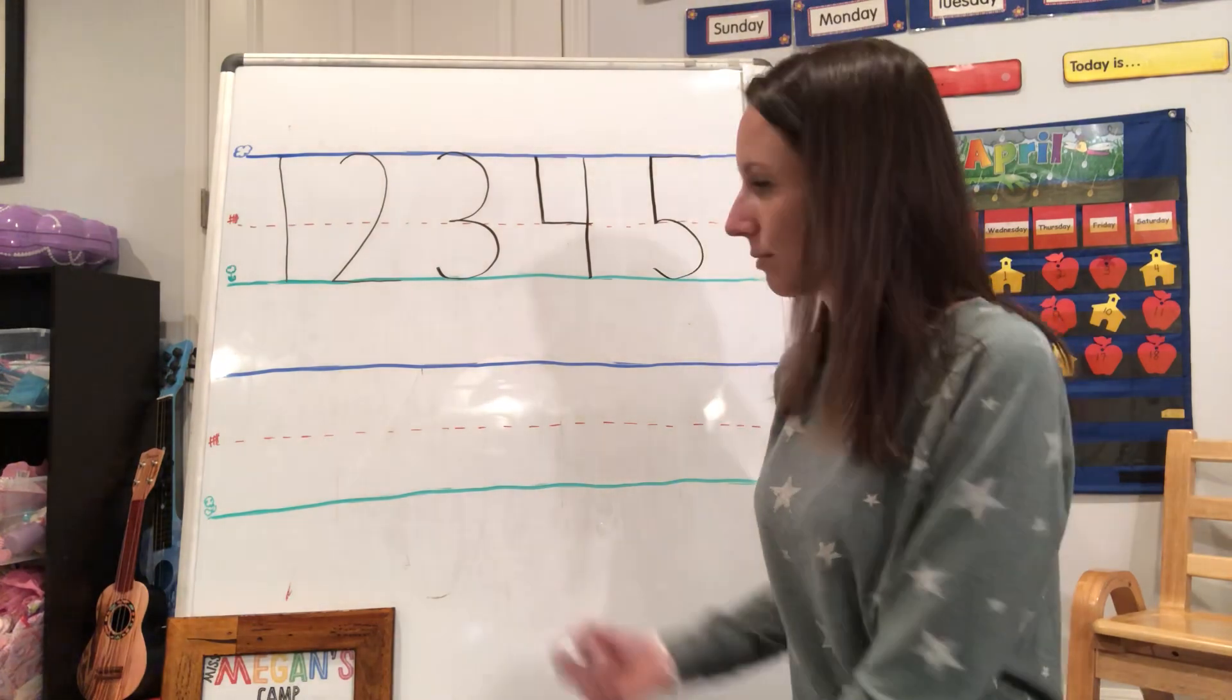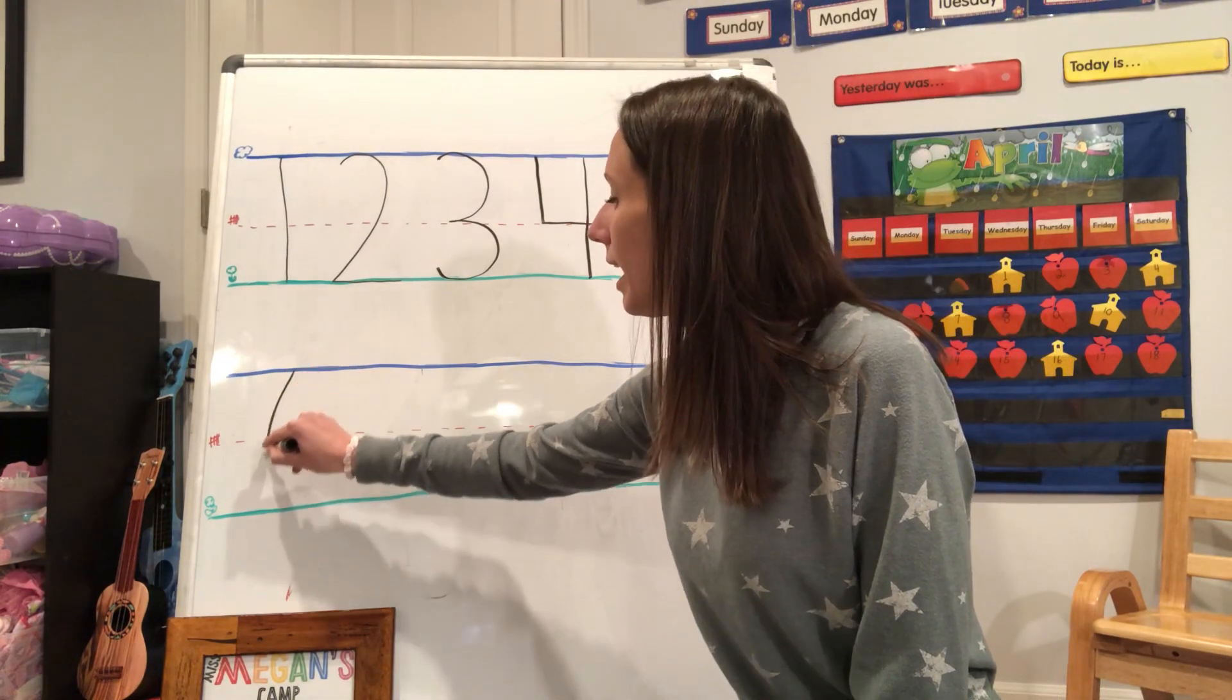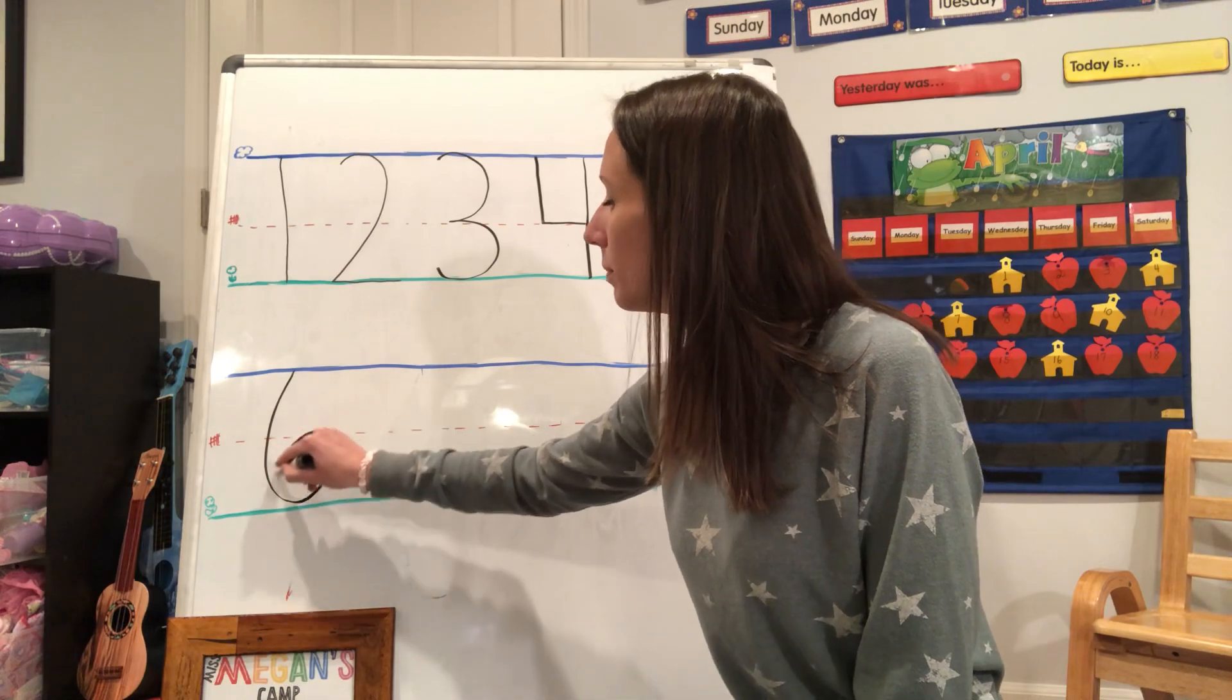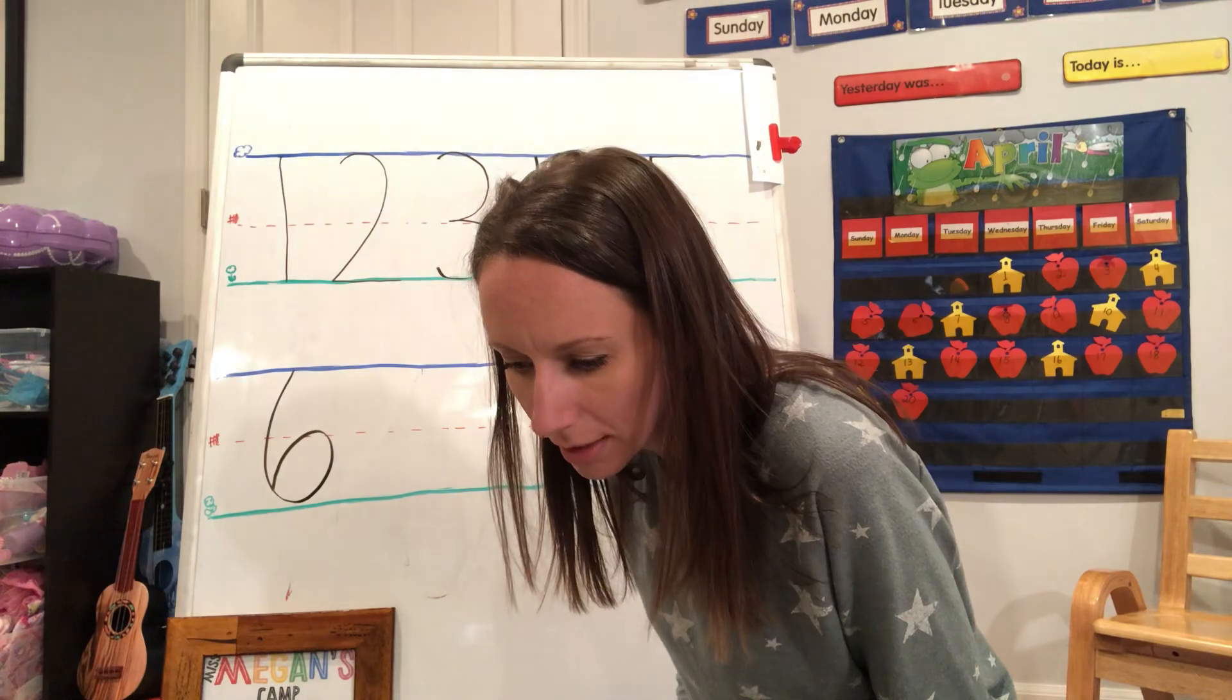Number six. We started at the sky. We say, a line and a loop, Mr. Six rolls a hoop. Did I say that right? I sure did. Good.